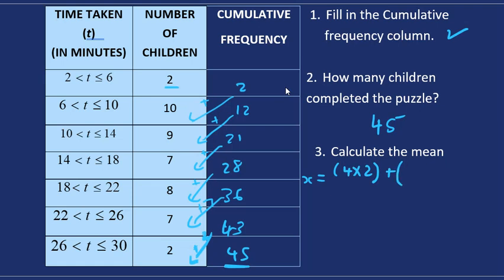For the second interval the middle point between 6 and 10 is 8 and we multiply it by 10. And so it goes. The middle point between 10 and 14 is 12 and we multiply the 12 by 9. So we'll do the same thing for all the intervals.